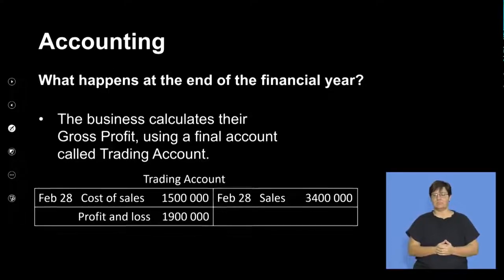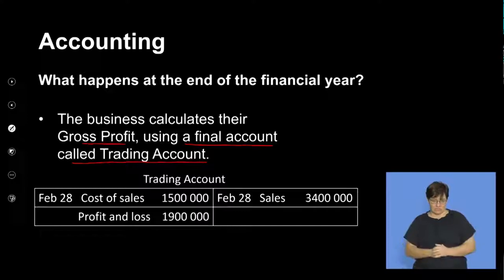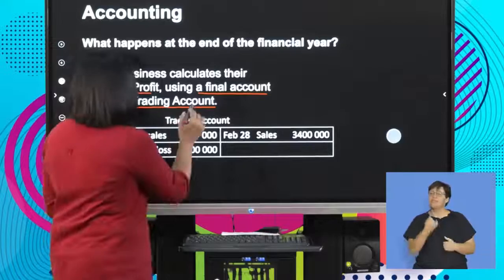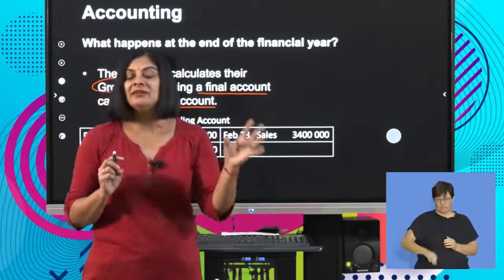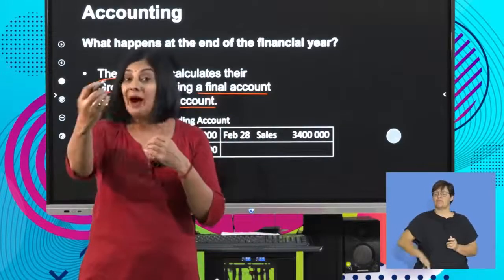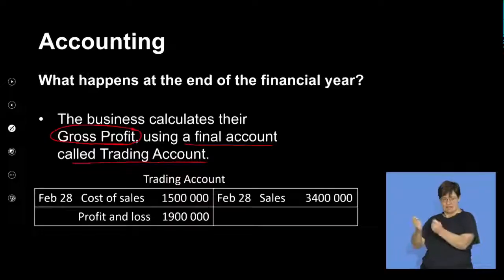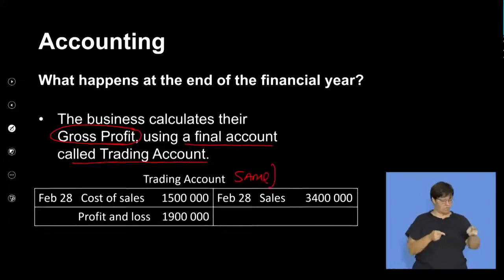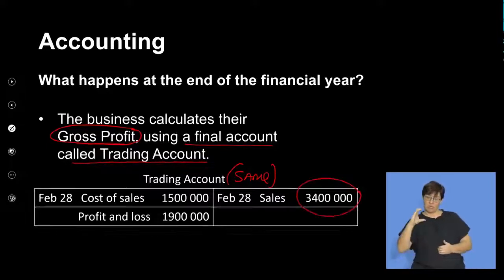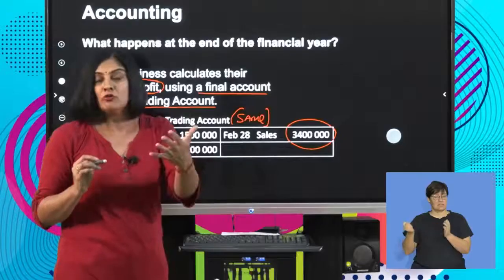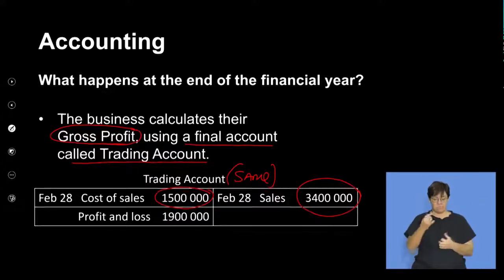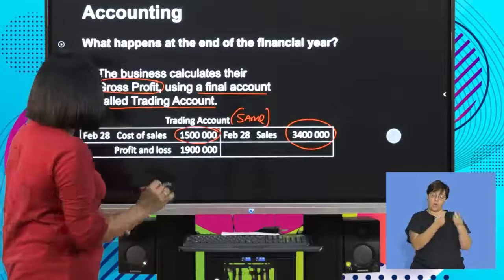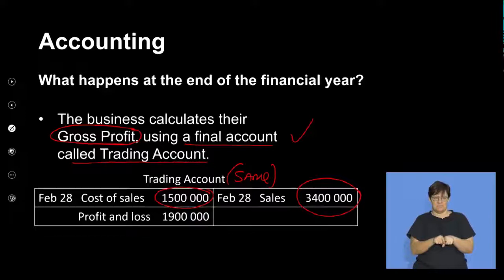The business calculates gross profit using a final account called the trading account. At the end of the financial year, whether it's a sole trader or a partnership, you are still calculating your gross profit — sales minus cost of sales. On the credit side, we close off sales after subtracting debtors allowance. On the debit side, we close off cost of sales for the year. So as you can see, this stays exactly the same as a sole trader.